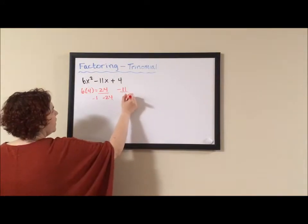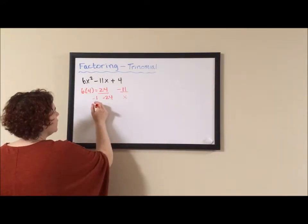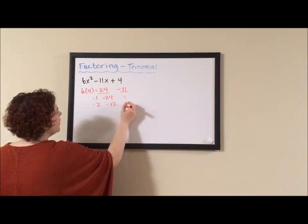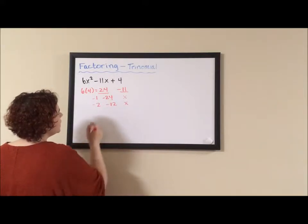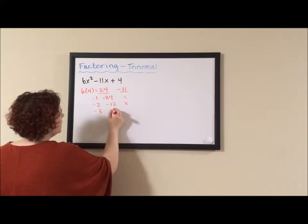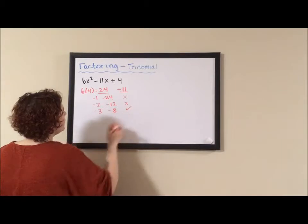This is negative 25. That's wrong. If I do negative 2 and negative 12, I would have 14. If I try negative 3 and negative 8, I have negative 11.